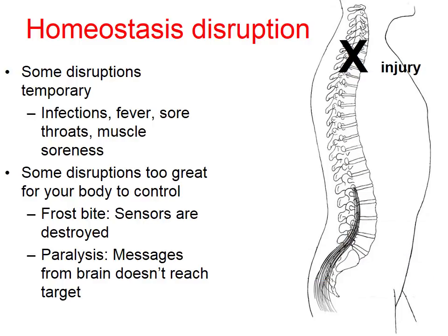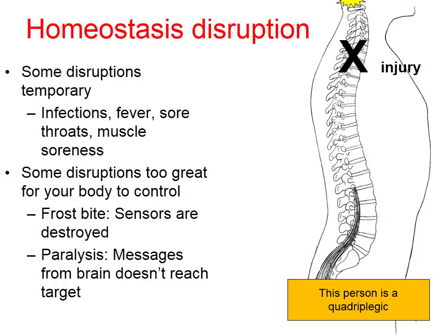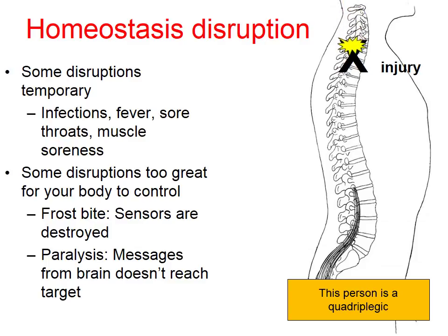If the injury is higher on the spine, it could be a lot more devastating. The brain can send a message, but it never gets past the injury site. In this case, the person could be a quadriplegic — 'quad' means four — they don't have the use of their four limbs, two arms and two legs. This is a more severe injury, and a great example of homeostasis disruption because signals are not being sent and there's no communication below the injury site.